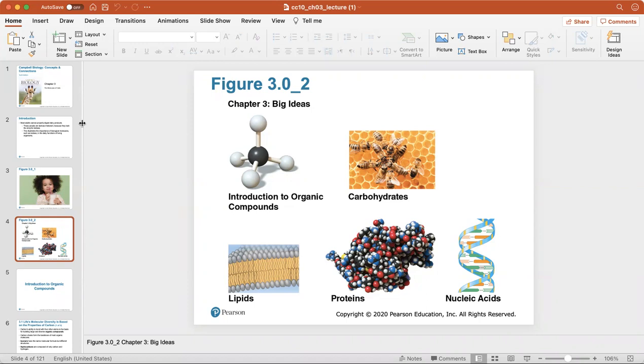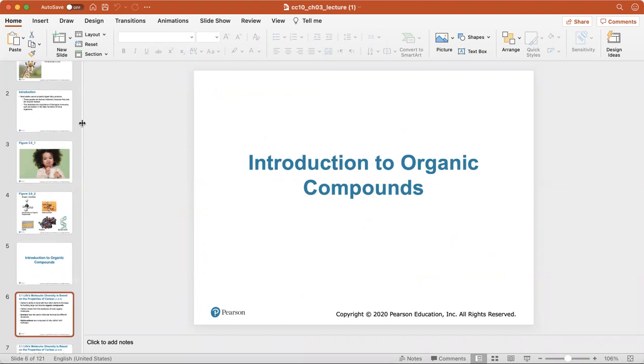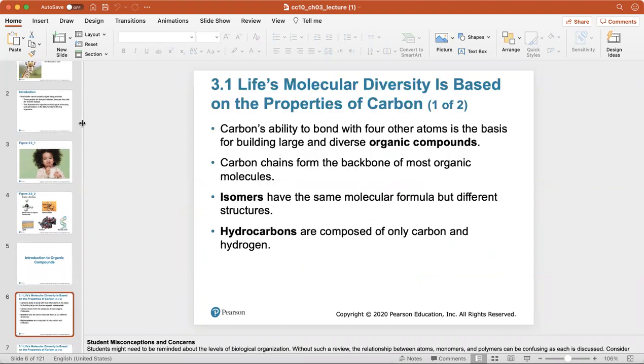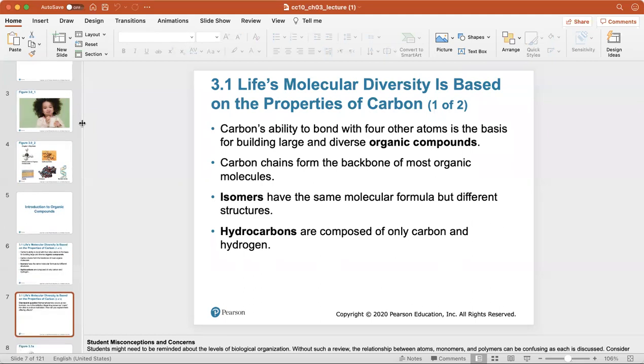Here we go with an introduction to organic compounds. Life's molecular diversity is based on the properties of carbon because carbon has the ability to bond with four other atoms, and it'll be the basis for building large and diverse organic compounds. Carbon chains form the backbone of most organic molecules. An isomer has the same molecular formula but different structures, and hydrocarbons are composed of only carbon and hydrogen.